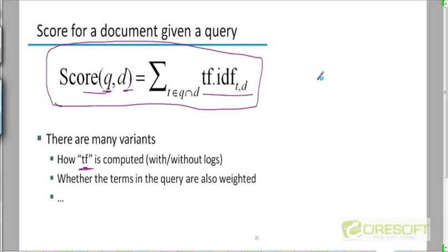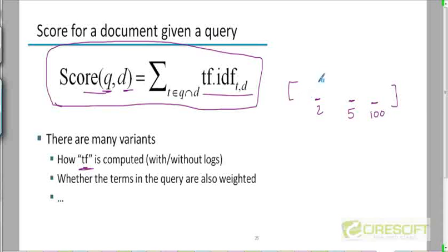This corresponds to just looking at the terms in the query and looking at the corresponding components of the vector. For example, if the query is 'capital of India,' and in the vector representation capital appears in the second position, 'of' appears in the fifth position, and India appears in the hundredth position, we look at the TF-IDF weights for all the documents at those three locations and add them up.